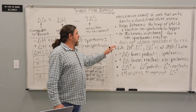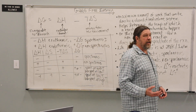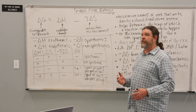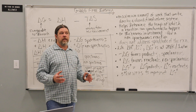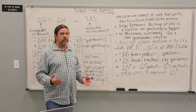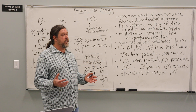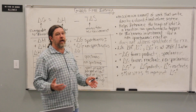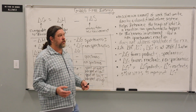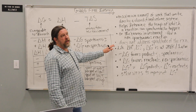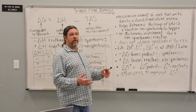Gibbs free energy does not address the speed or the rate of reactions. Some spontaneous reactions are very fast, and others can take minutes, hours, days, years, and centuries. The decomposition of a diamond into graphite — the hardest substance in the world — is a spontaneous reaction, but it happens slowly over thousands of years. We do not see a diamond turn into pencil graphite in our lifetimes. So, spontaneity does not address speed — it's just the favorability of whether the reaction will happen.